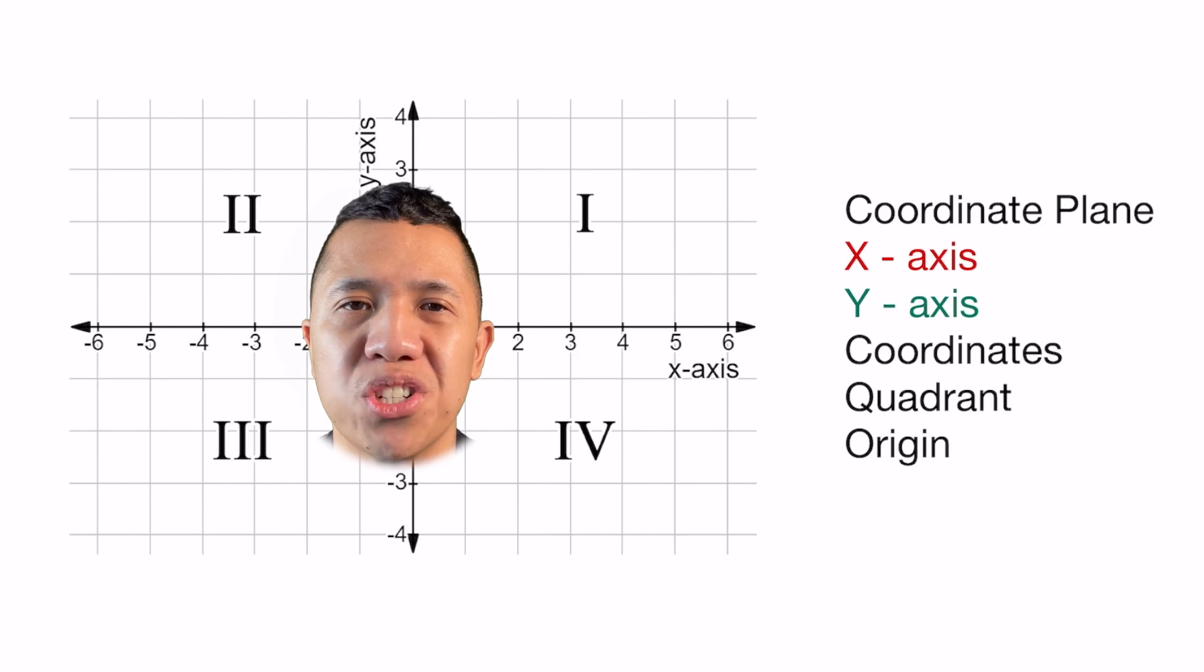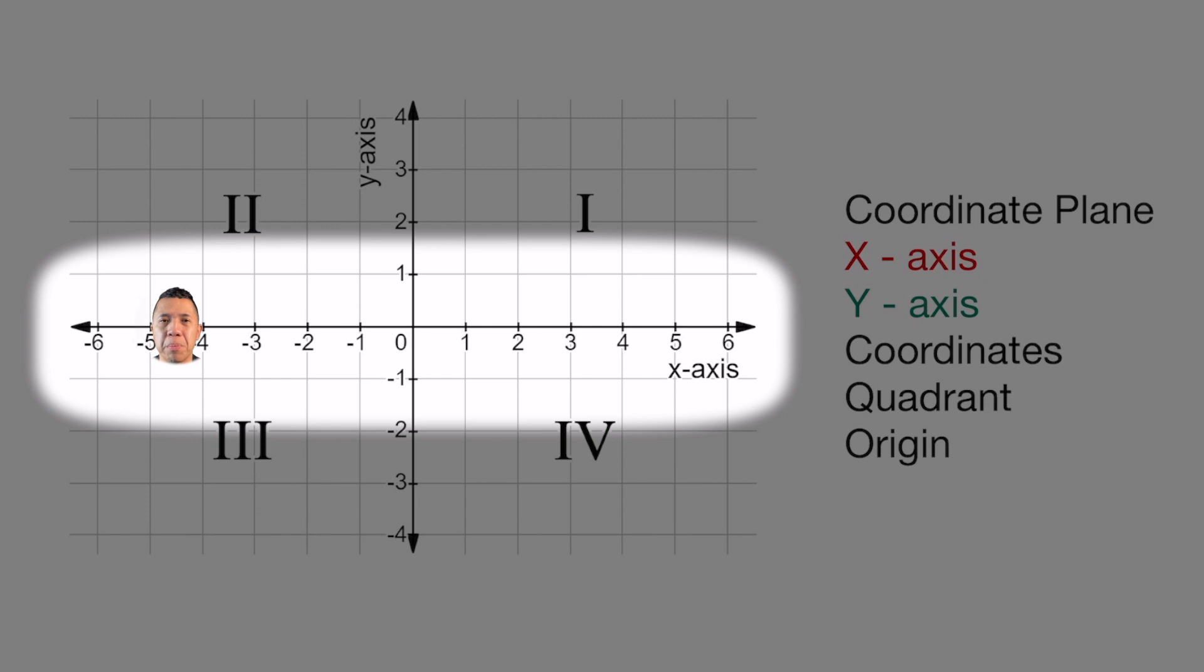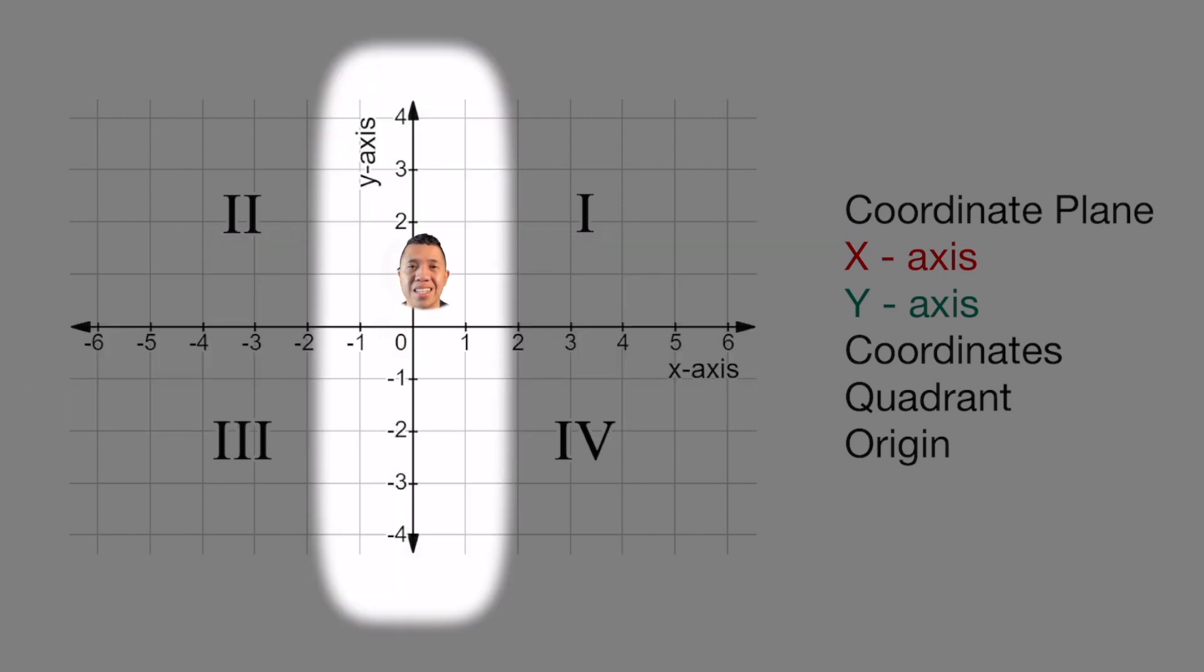A coordinate plane is just a fancy word for the graph. It's the whole graph. The coordinate plane has an x-axis, which is this line right here that goes left and right. Everything to the right of zero is positive and everything to the left of zero is negative. It also has a y-axis. The y-axis from zero, everything above is positive and everything below is negative.